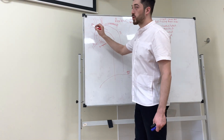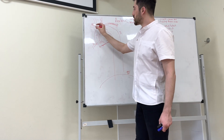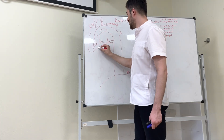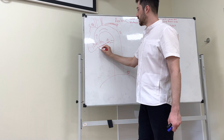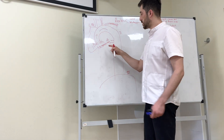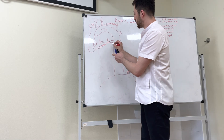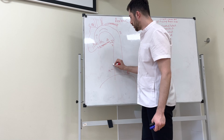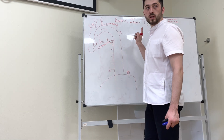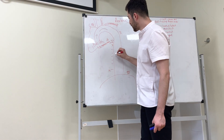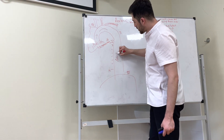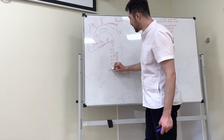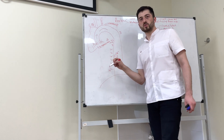We have the costocervical trunk — it goes to the cervix and comes to the ribs, giving us the supreme intercostal artery for the first and second ribs. Starting from the third rib to the twelfth, the posterior intercostal arteries arise from the thoracic aorta, running along the lower border of the ribs.